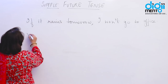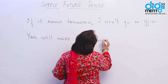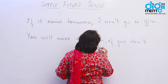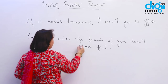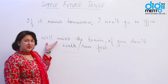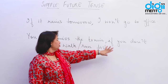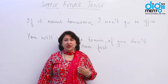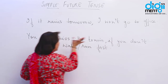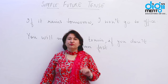Another example: 'You will miss the train if you don't walk fast.' Here the first condition is 'if you don't walk fast' — simple present — and the second condition 'you will miss the train' is simple future. So the first condition takes simple present tense and the second condition takes simple future tense.